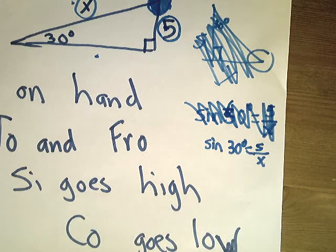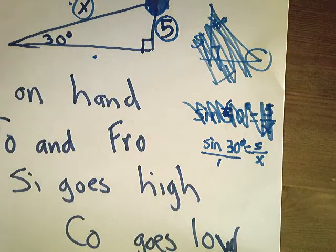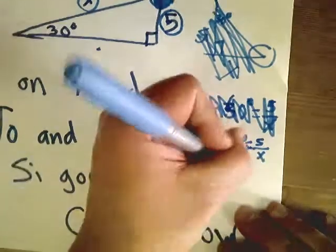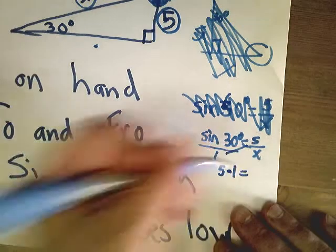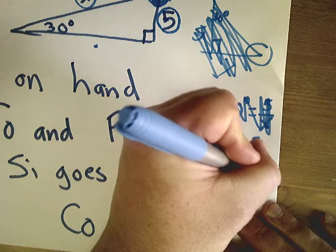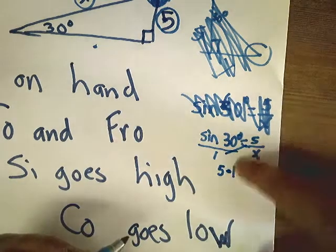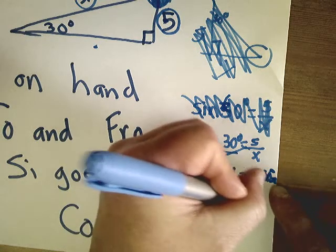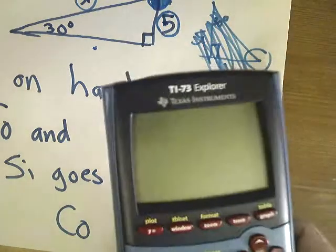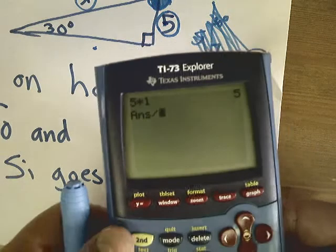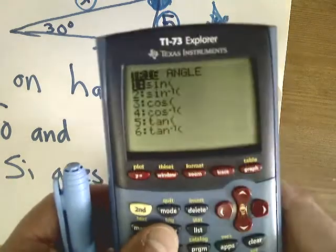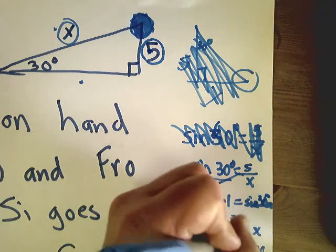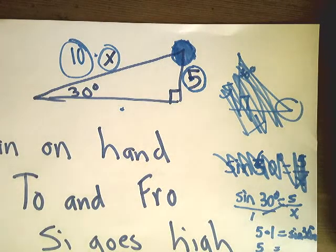The x always goes on the bottom. Now that I know it's a sine question, I put the trig function over 1 and use cross products. So: 5 times 1 = sine(30°) times x. To get rid of times sine(30°), I divide by sine(30°). I do 5 divided by sine(30°) on the calculator — go to second, trig, sine, 30 degrees. The calculator gives me 10. So x equals 10.